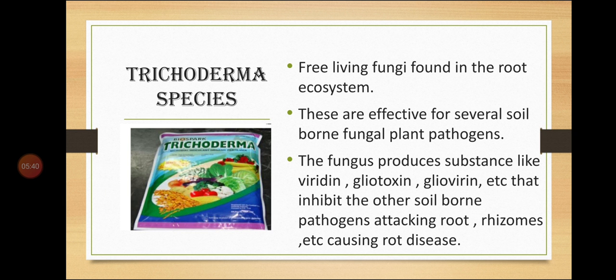The second example is Trichoderma species. This is a free-living fungi found in the root ecosystem. These are very effective against several soil-borne fungal plant pathogens. The fungus produces substances like viridine, gliotoxin, gliovirine, etc., that inhibit other soil-borne pathogens attacking the roots, rhizomes, etc., causing rot diseases.